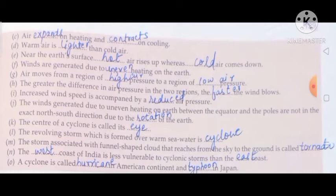E) near the earth's surface hot air rises up whereas cold air comes down. F) winds are generated due to uneven heating on the earth. G) air moves from a region of high air pressure to a region of low air pressure.